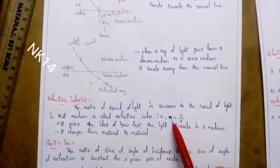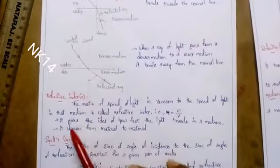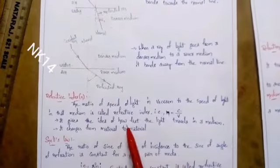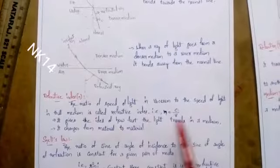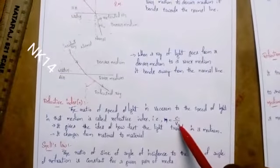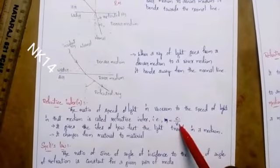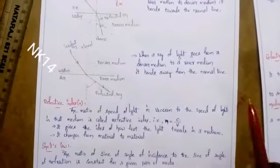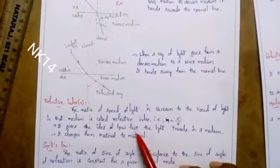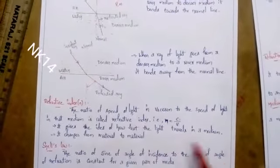The refractive index formula is n = c/v. It gives the idea of how fast the light travels in a medium. If you divide the speed of light in vacuum by the speed of light in any other medium, you will get the refractive index.